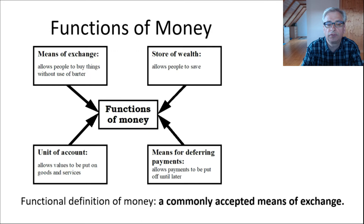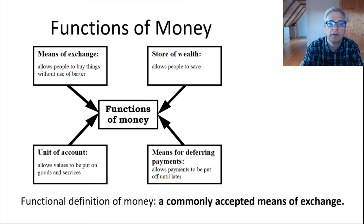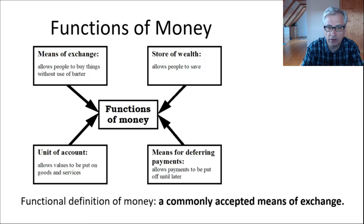The last function is means for deferred payment, which simply means that money allows you to put your payments off until later. This is what you see with credit cards — you spend money now but actually pay later. This is also what you see when you pay your electricity bill for your previous month's consumption. The means of exchange is about exchanging things at the same time, whereas means for deferred payment means you get something first and after some time you pay.